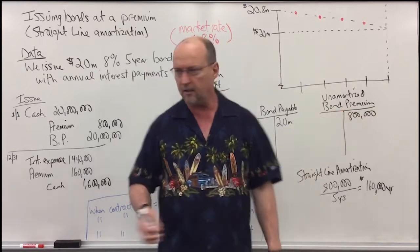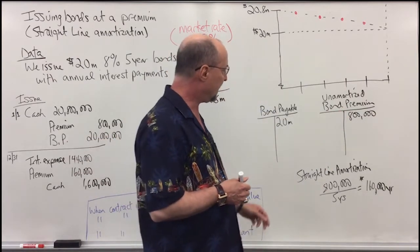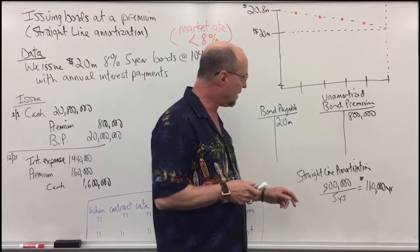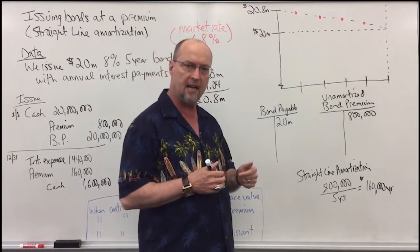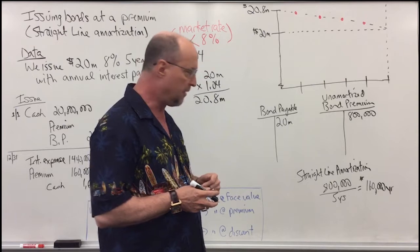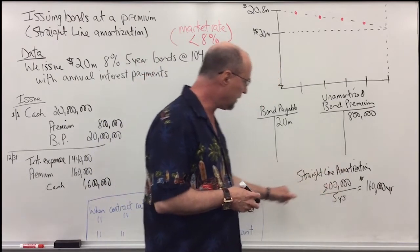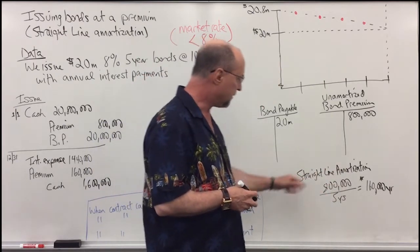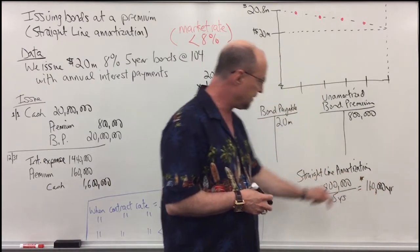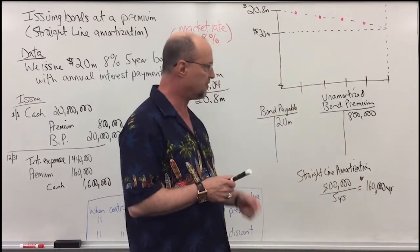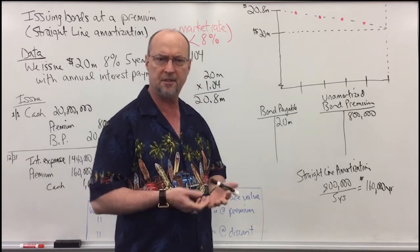We're going to amortize the premium over the five-year life of the bond using the straight-line method. We simply take $800,000 and divide by five years, and each year we amortize $160,000 per year. So what is amortization?